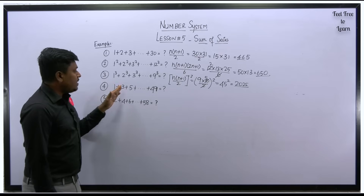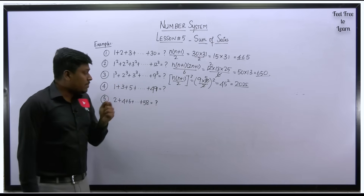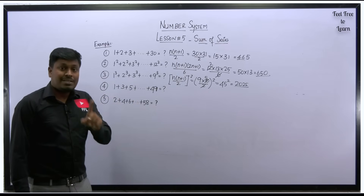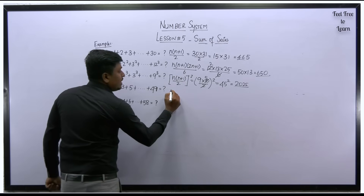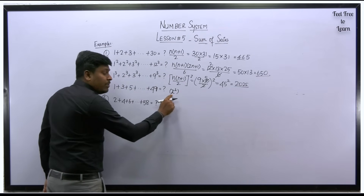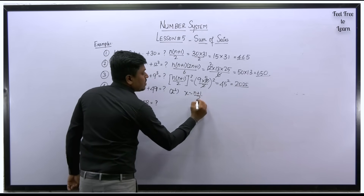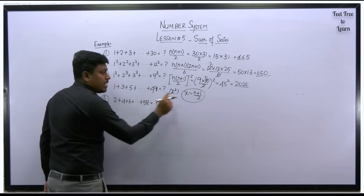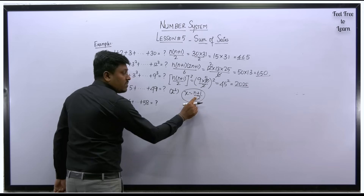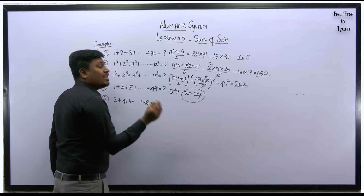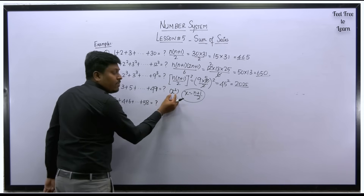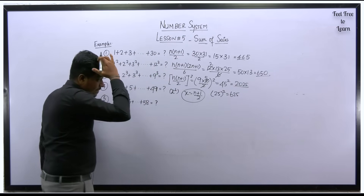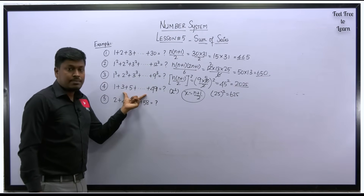Question 4: 1, 3, 5 till 49. It's model 2, category 1 — odd numbers. Formula: x square, where x equals n plus 1 divided by 2. So n is 49; 49 plus 1 equals 50, divided by 2 equals 25. The value of x is 25. So 25 squared equals 625. So 625 is the sum of series for question 4.